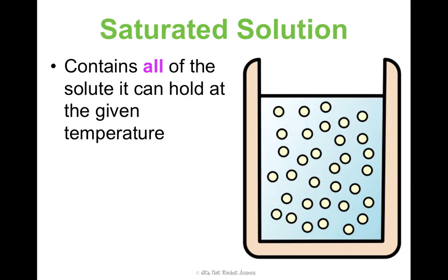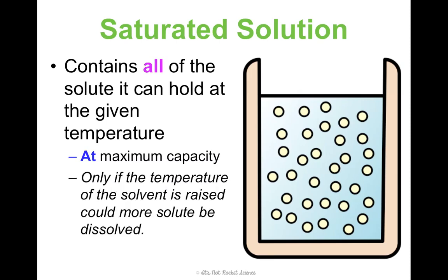A saturated solution contains all of the solute it can hold at the given temperature — it's at its maximum capacity. With the lemonade example, if the maximum solubility at room temperature is 10 grams, a saturated solution would be exactly 10 grams of that powder dissolved in the water. The only way to change this is to raise the temperature, which would make it unsaturated so we could add more.